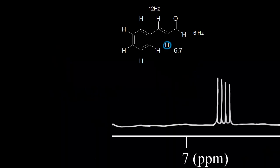More complex splitting occurs when a proton has two different kinds of neighbors. A good example of this is the blue proton circled in cinnamaldehyde. The blue proton has a signal with a chemical shift of about 6.7 parts per million, and down here is a zoomed-in view of the signal for the blue proton.